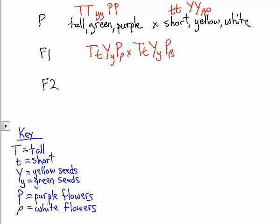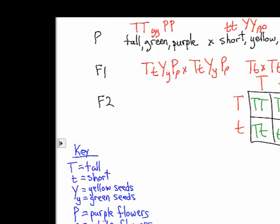So for example, let's just worry about the height. If that's our concern, then our problem really becomes big T, little t crossed with another big T, little t. And that's an easy solution. We have three tall to one short.